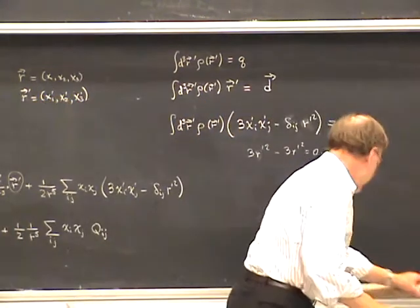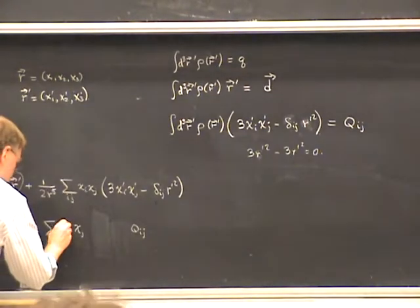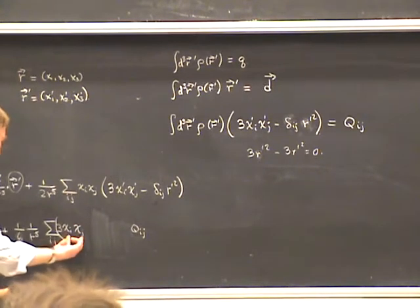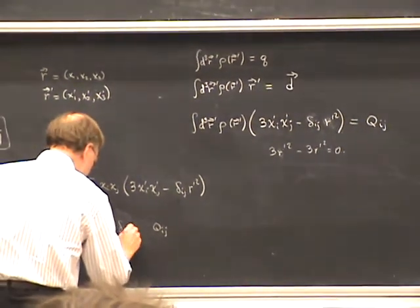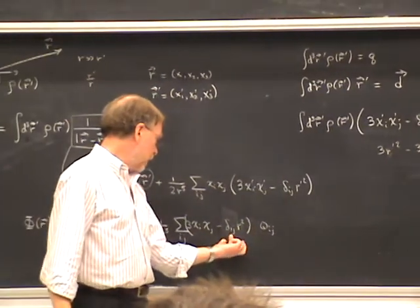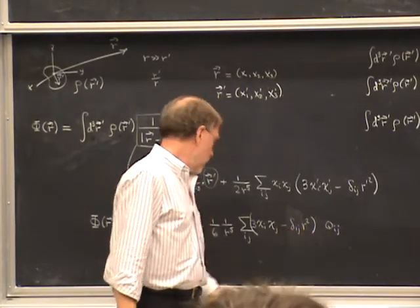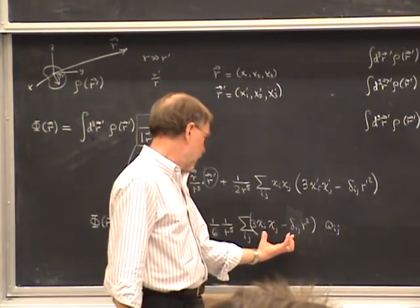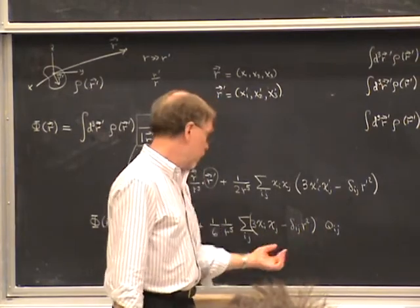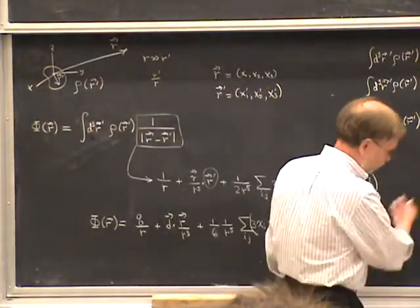There's an interesting thing you can do with the expression for the potential: multiply and divide by 3, making the denominator 6. Then take the term 3 x_i x_j and subtract off its trace (delta_ij r²) — this doesn't change the answer because the delta_ij term contracted against the traceless Q_ij is zero. What this shows is that the second-order contribution to the potential involves a complete contraction of one K=2 tensor with another K=2 tensor — one involves the source point, one involves the field point.